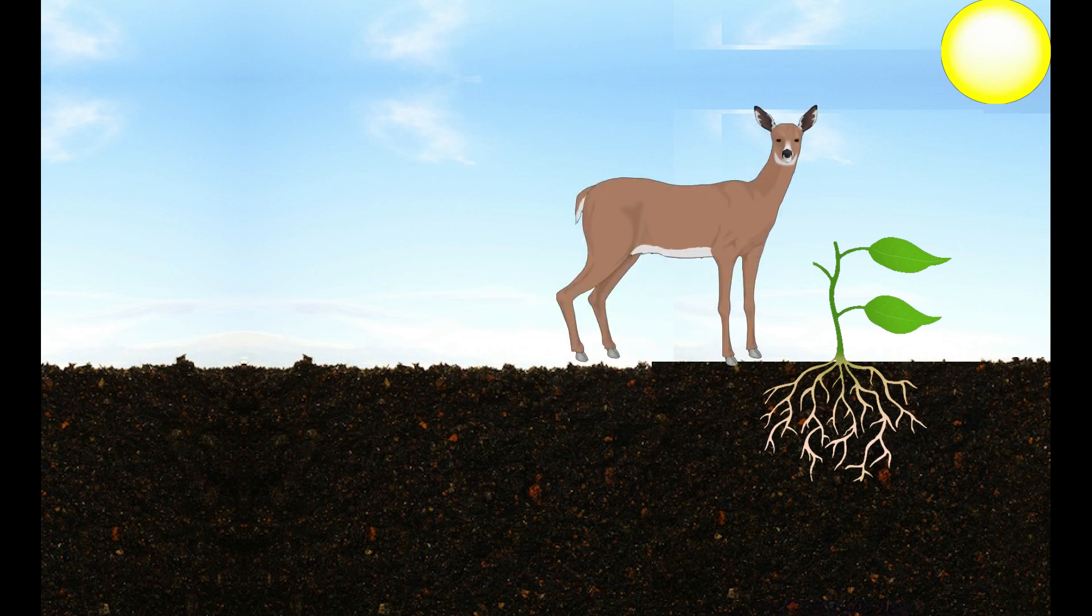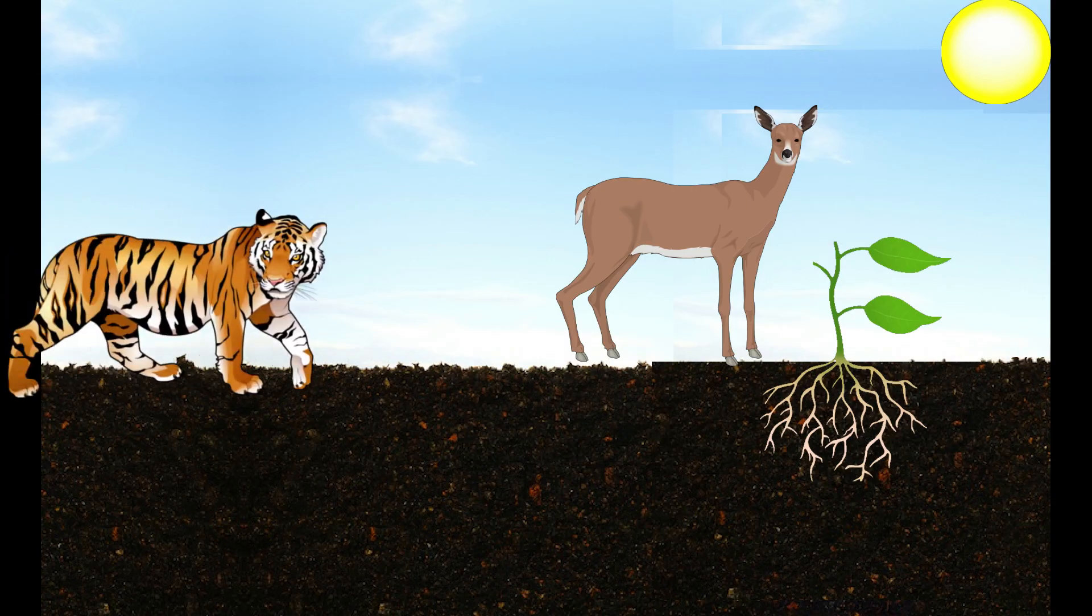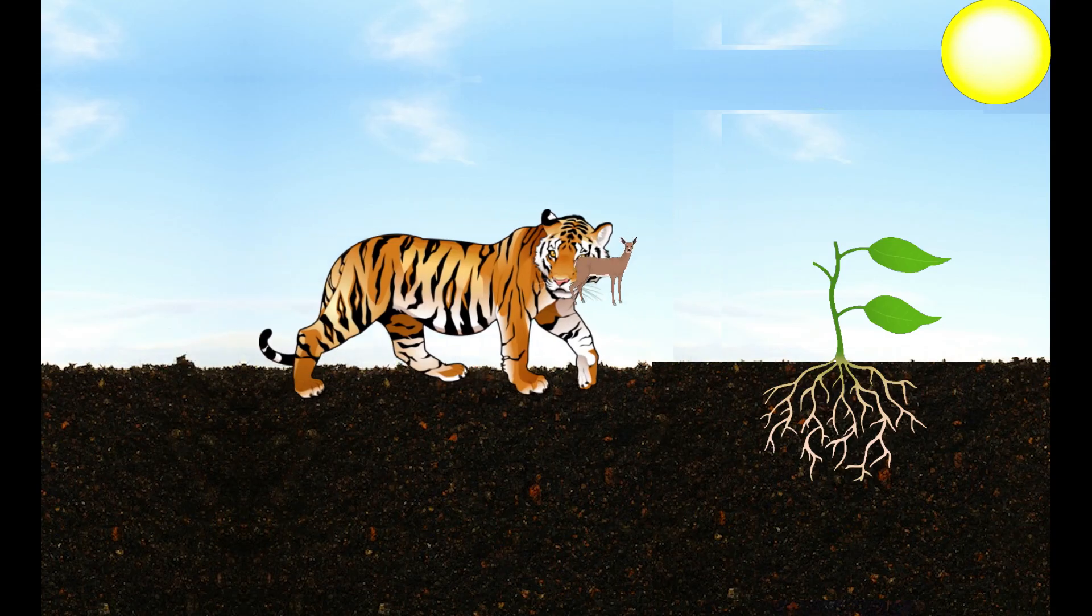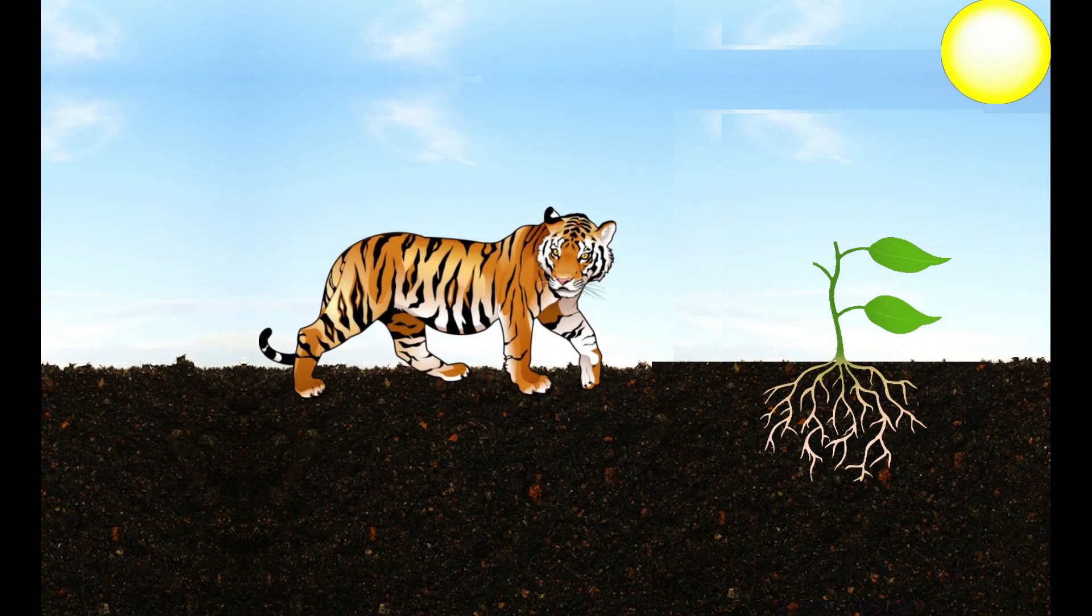In a consumer, energy is stored in the form of muscles and bones. When a carnivore eats a herbivore, energy stored in the herbivore's body gets transferred to the carnivore.